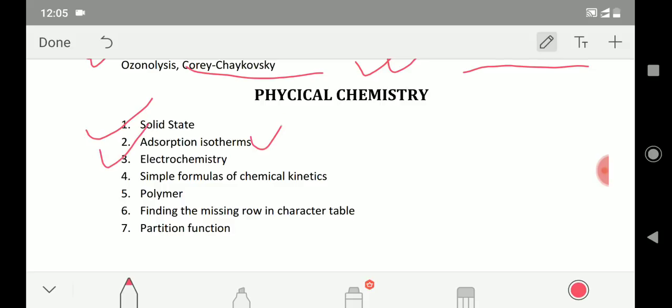Then adsorption isotherms, the Langmuir BET and other adsorption isotherms. If you just know the formula, you can easily solve questions. Then electrochemistry - it is again a very BSc level concept. All the conductance calculations, this type of question comes, so it is again an easy topic.